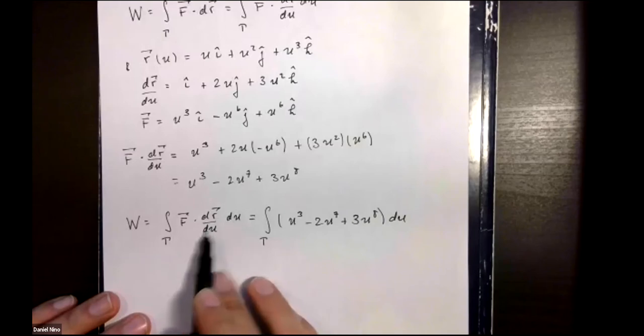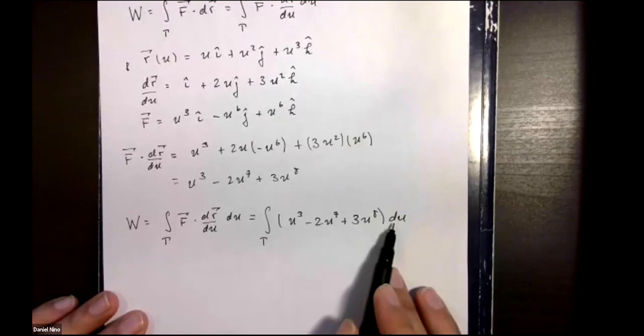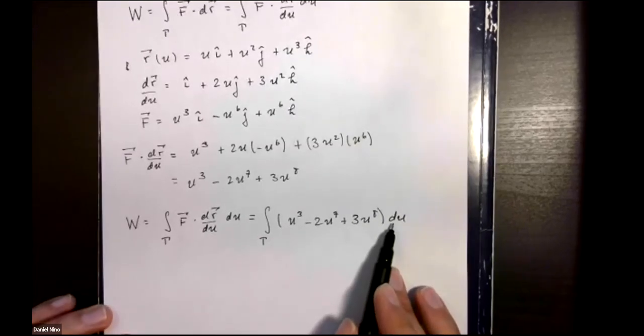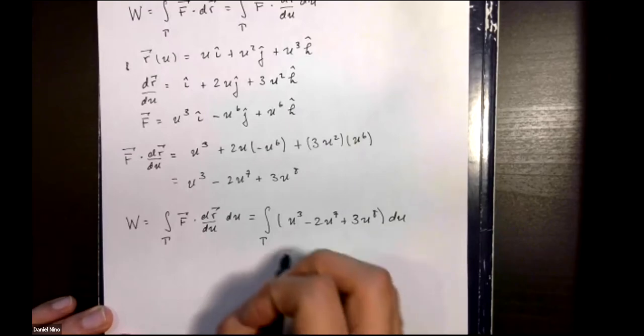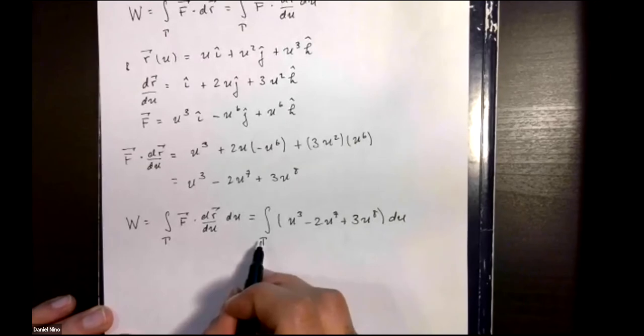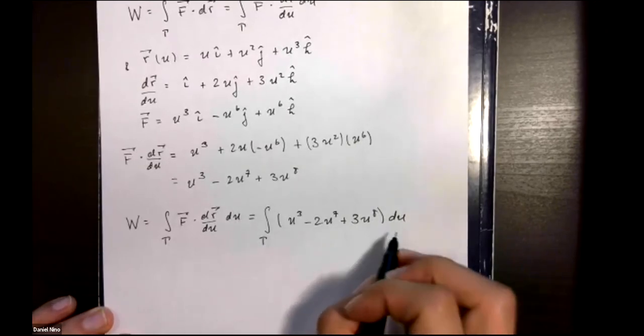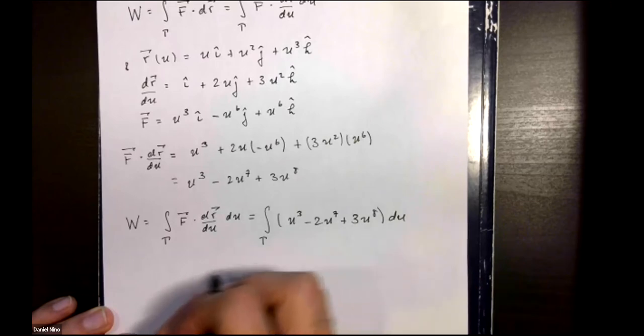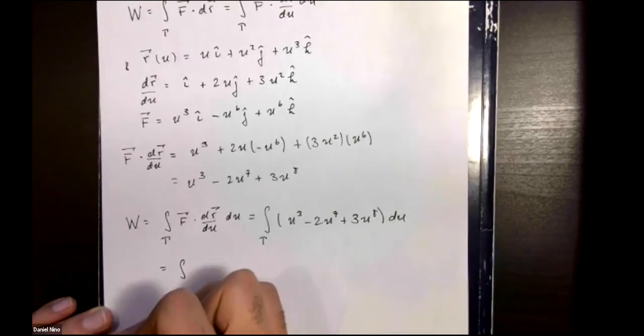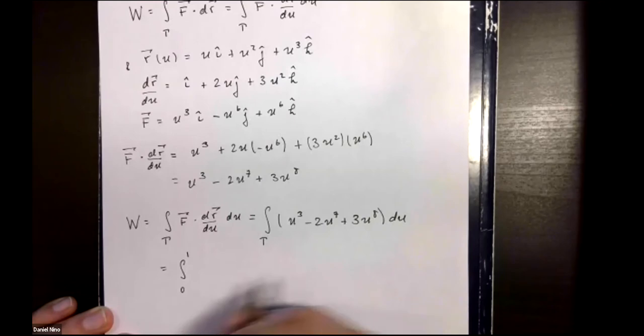We have u cubed minus 2u to the 7 plus 3u to the 8 du, and this was the reason why we didn't cancel out this du because we needed a differential to be able to integrate with respect to. We said that we wanted to go from the origin to the point (1,1,1), that means that our limits of integration are from 0 to 1 for u.